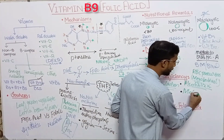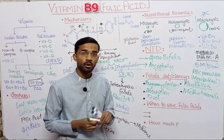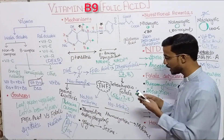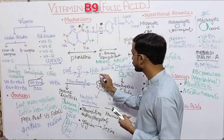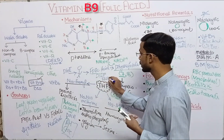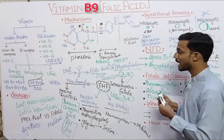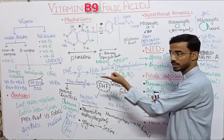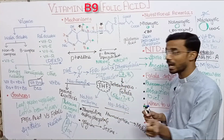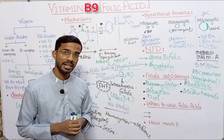Another cause is methotrexate. Methotrexate is involved because it blocks the enzyme dihydrofolate reductase. This enzyme is responsible for the conversion of folic acid to dihydrofolate and then to tetrahydrofolate. If methotrexate inhibits this enzyme, it also causes folate deficiency.